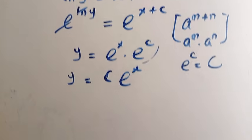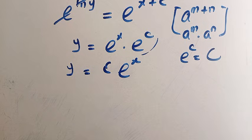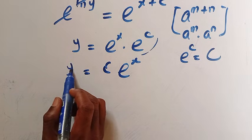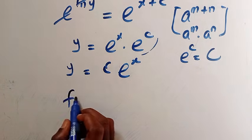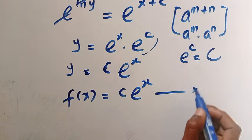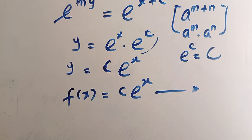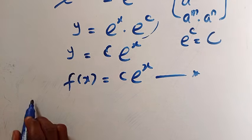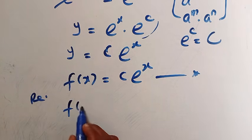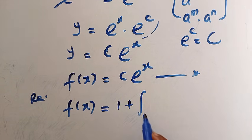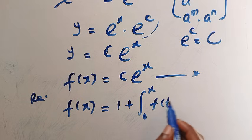But we have to know the value of C. We recall back from the original equation, and since we let f of x be equal to y, let's replace it. We are going to have f of x equals C multiplied by e to the x. This is the value for f of x. Then we have to get the value of C. When we recall from the original equation, f of x equals 1 plus the integral from 0 to x of f of t dt.